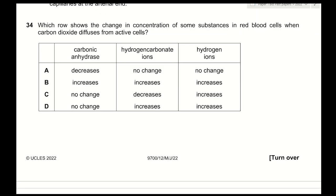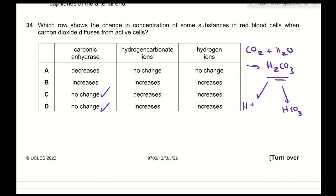Question 34: which row shows the change in concentration of substances in red blood cells when carbon dioxide diffuses from active cells? Carbonic anhydrase converts CO₂ and water to carbonic acid — its concentration is not altered, so no change. Carbonic acid dissociates into hydrogen ions and hydrogen carbonate (bicarbonate) ions. Therefore, when CO₂ concentration increases, both hydrogen carbonate ions and hydrogen ions increase. The answer is D.